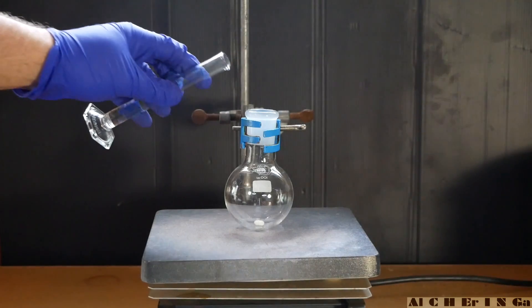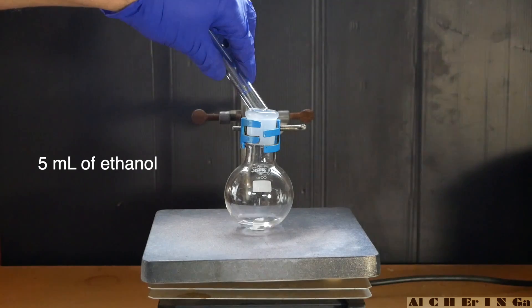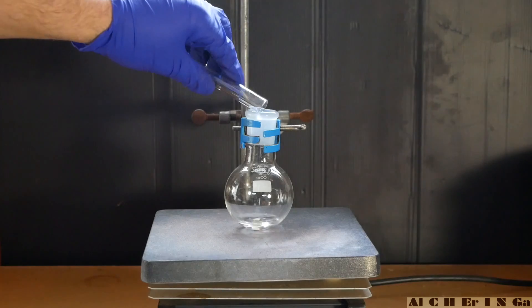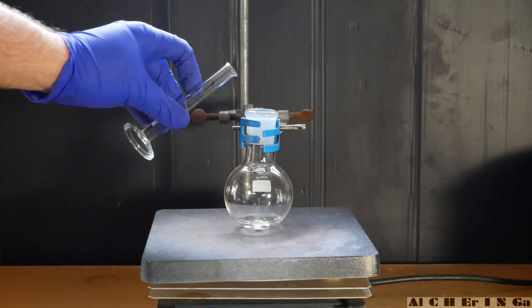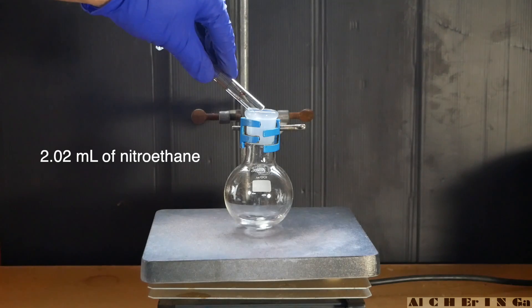To start the experiment, add 5 ml of ethanol into a round bottom flask. Start stirring. On top of that, add 2.02 ml of nitroethane.